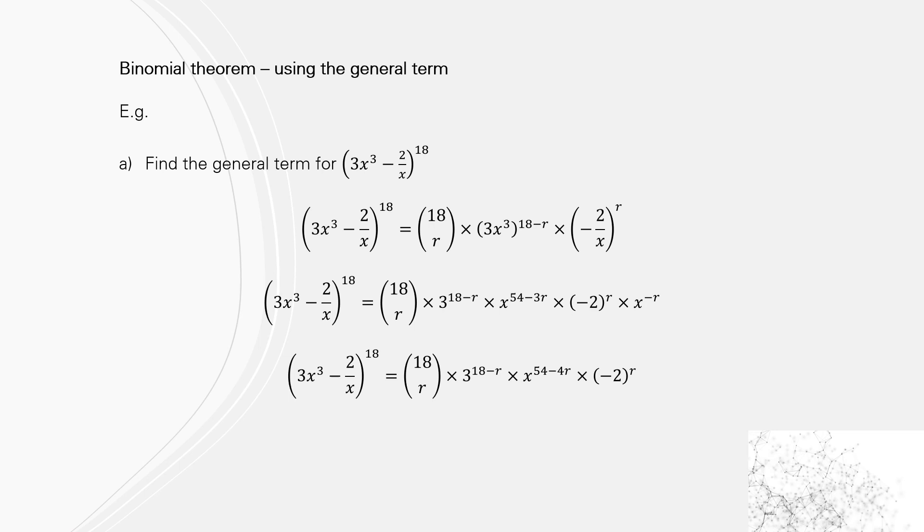Collecting like terms - not like terms, sorry - multiplying and adding indices. So the x, the base x becomes 54-4r. So that's our general term.